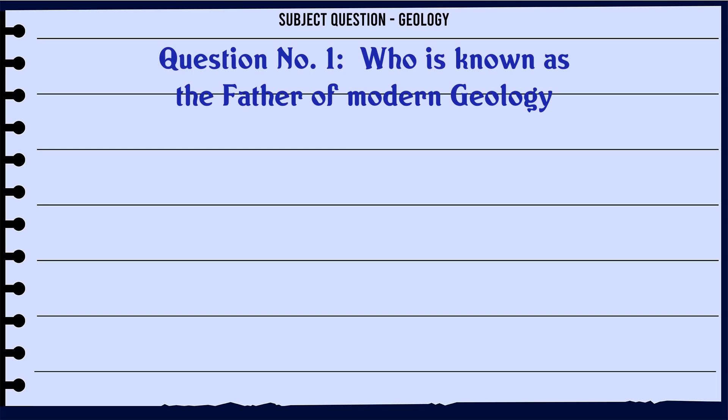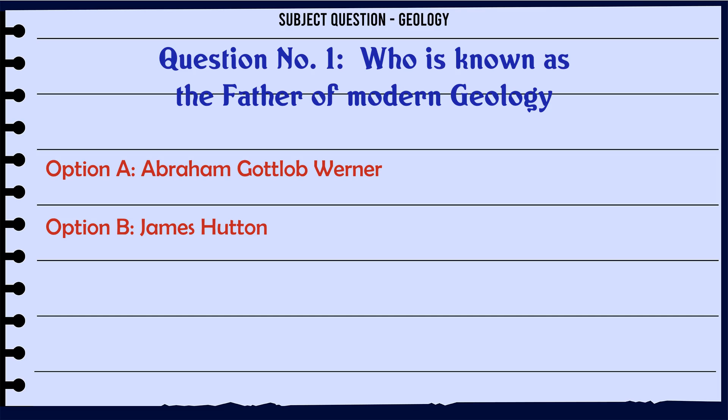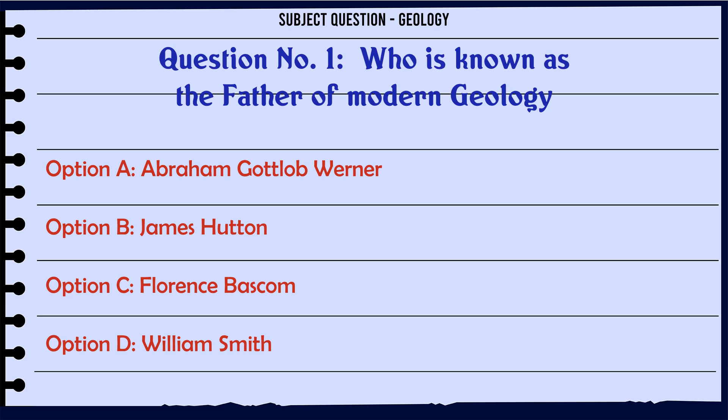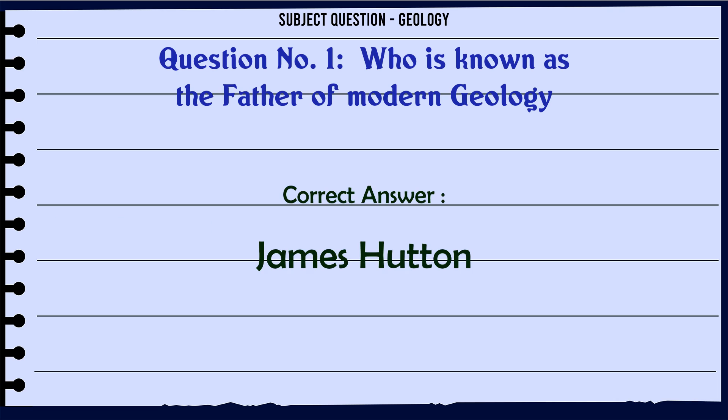Who is known as the father of modern geology? A. Abraham Gottlob Werner. B. James Hutton. C. Florence Bascom. D. William Smith. The correct answer is James Hutton.